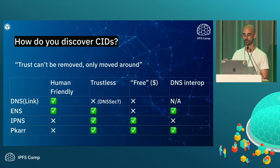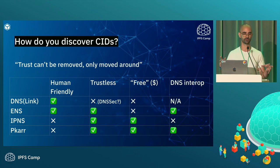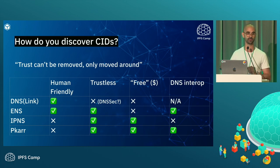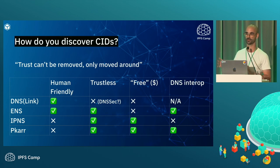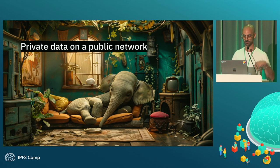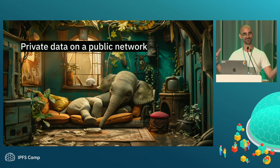ENS, in theory, being a blockchain-based system might be the solution. But in most situations, if you're doing ENS resolution today, you're still relying on trusted responses from an RPC endpoint rather than actually doing a Merkle proof verification. There's a lot of progress around light clients, and we may see progress on that — but again, this is a long-term project, and these are the problems we should be thinking about.